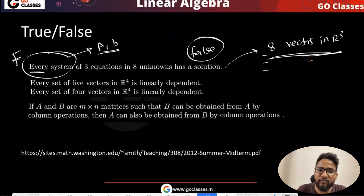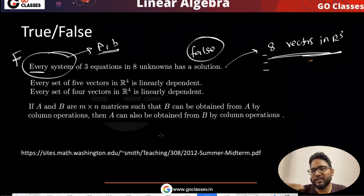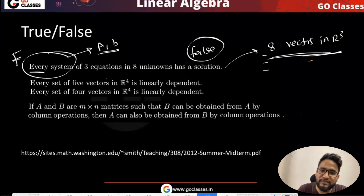Every set of five vectors in R4 is linearly dependent. Obviously, if you take five vectors in R4, they have to be linearly dependent. That's why this is true.